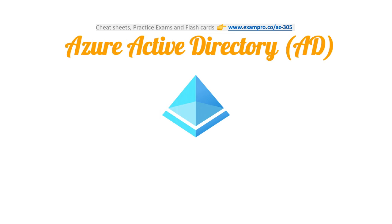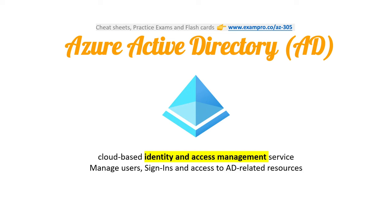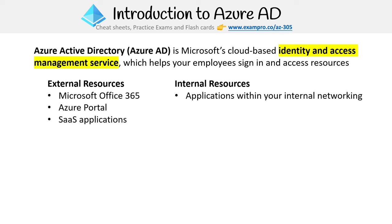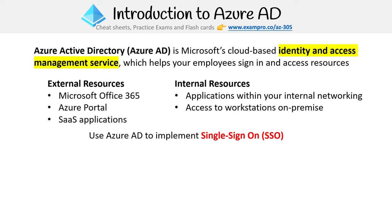Azure Active Directory is a cloud-based identity and access management service to manage users' sign-ins and access to related resources. Microsoft's cloud-based IAM service helps your employees sign in and access resources — external resources like Microsoft Office 365, the Azure portal, SaaS applications, or internal resources like applications within your internal network or access to workstations on-premise. You can use Azure AD to implement single sign-on — it's basically the one solution to log into everything. We use it at ExamPro with Microsoft Teams, our admin panel, AWS, and Azure. It has a lot of flexibility, and if you're building out applications for enterprises, they're likely using AD.